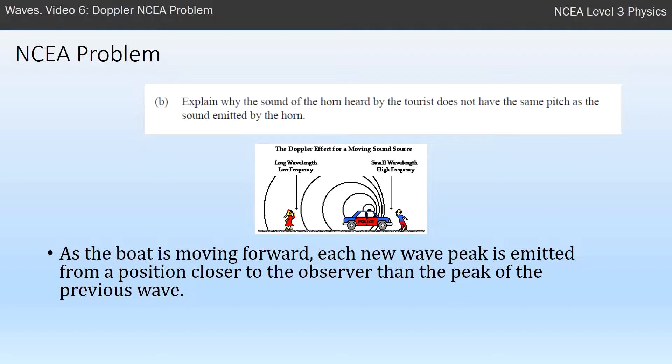So the boat moves forward and what it does is it emits waves and each new wave peak is emitted from a position closer to that observer as it's moving forward than the peak of the previous wave. As it's moving forward, it emits another one and moves forward, it emits another one. And these ones are getting closer and closer to the person. And so the waves in front of it are bunched.